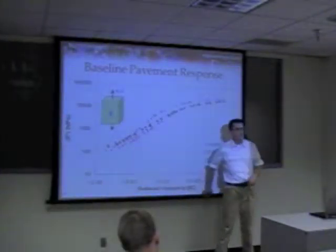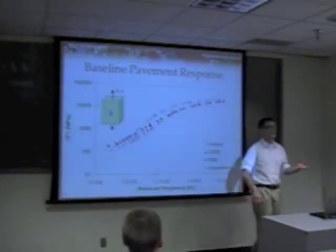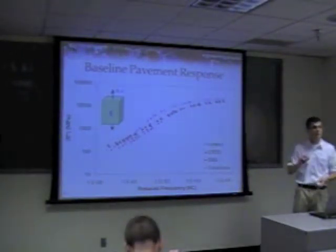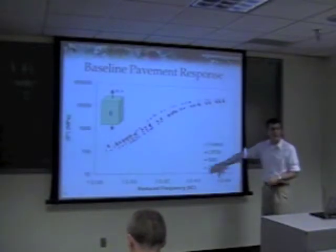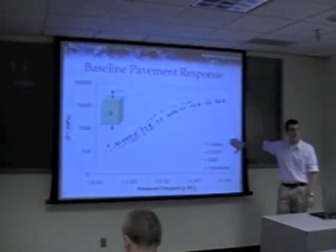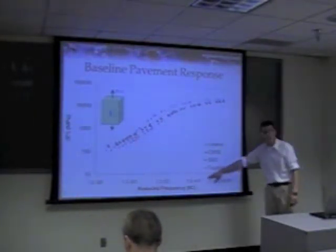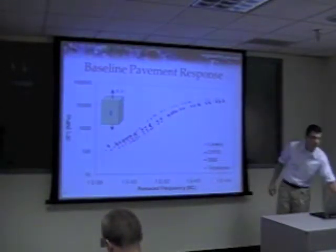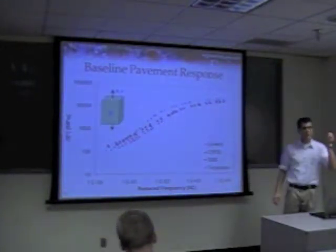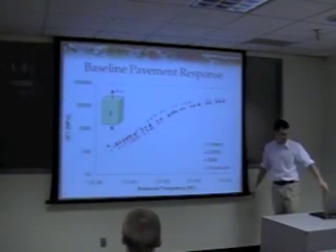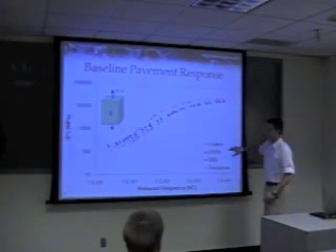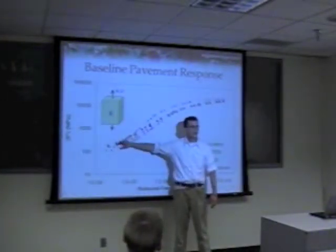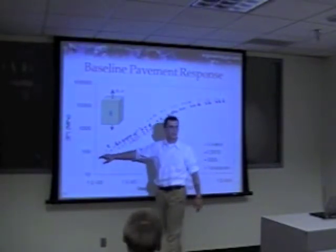We look at something called reduced frequency, which is like frequency — it's about loading the material fast or slow. What we find is that if I load this asphalt concrete quickly, it responds stiffly, just like when I bounce a rubber ball. But if you load it slowly, it responds with a relatively low modulus.